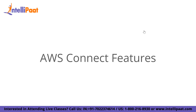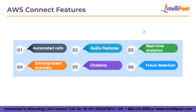Now let us move on to the features of AWS Connect. There are six features in total: automated calls, audio features, real-time analytics, omnipresent channels as we have talked about in the benefits, chatbots as a feature, and finally fraud detection. I will be talking about all of these features in brief.